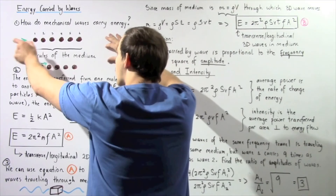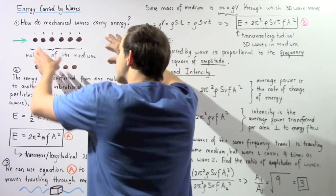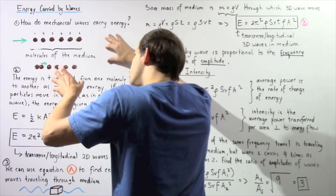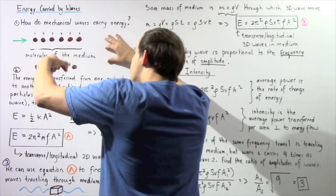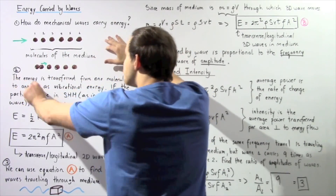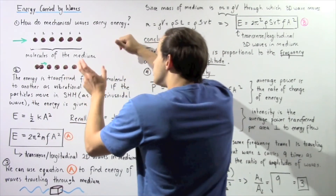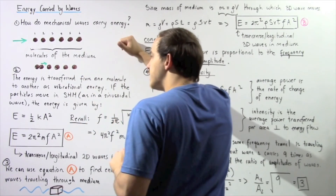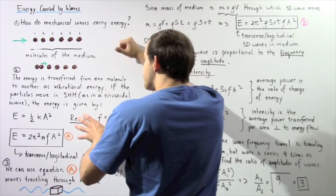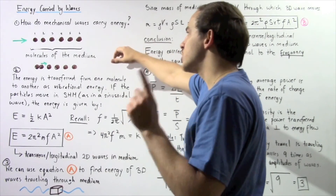When molecule 1 begins to oscillate, it bumps into molecule 2 and transfers that vibrational energy to molecule 2. Then molecule 2 begins to vibrate or oscillate, which then bumps into molecule 3 and this continues. So the energy in a mechanical wave propagating through a medium is transferred from one molecule to a second molecule as vibrational energy.